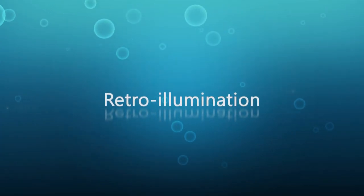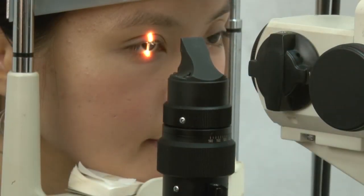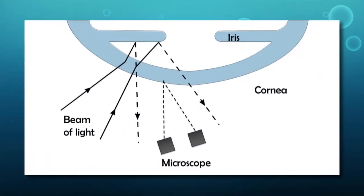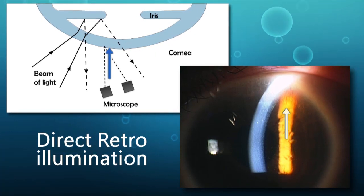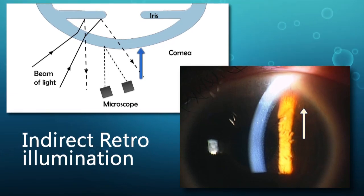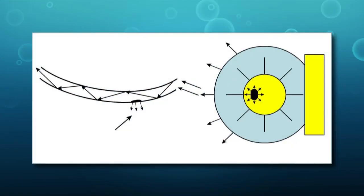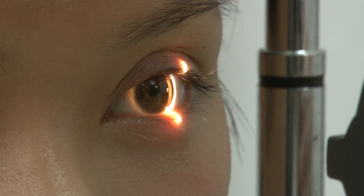Retro illumination makes use of light reflected from the iris or retina as a secondary source of illumination to examine eye structures in front of it, for example the cornea. It is called direct retro illumination if the viewing location is illuminated by the secondary light source, and indirect retro illumination if the viewing location is next to it. This technique uses the internal reflection of light inside the cornea to observe opaque or semi-transparent conditions such as corneal abrasion, edema, scars, and vacuoles.